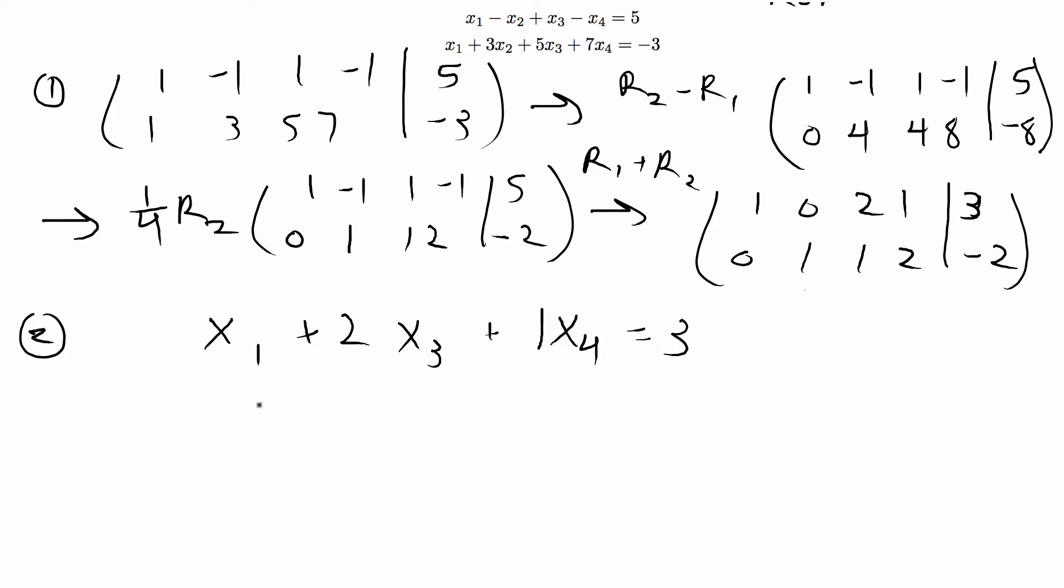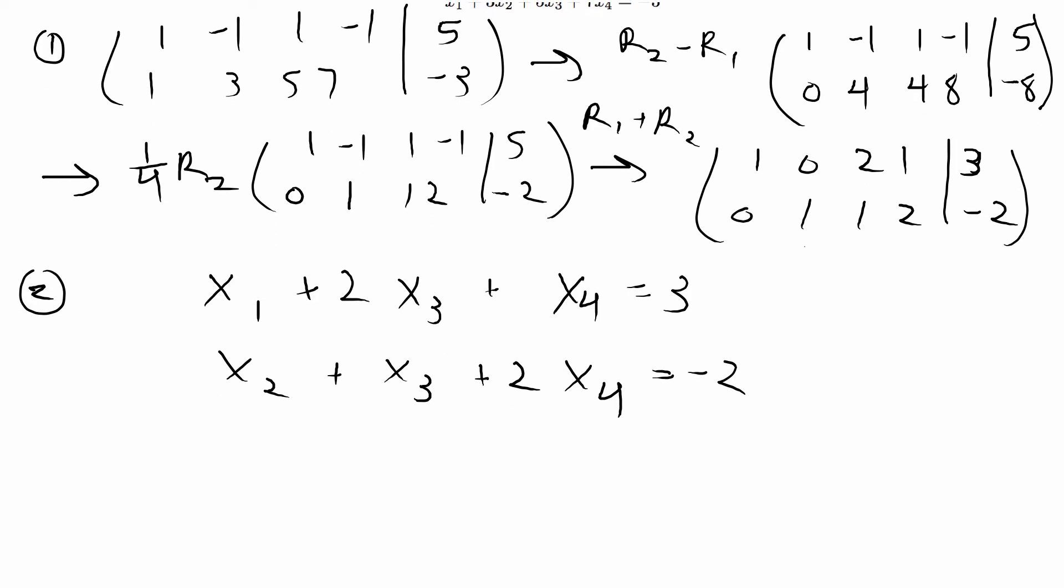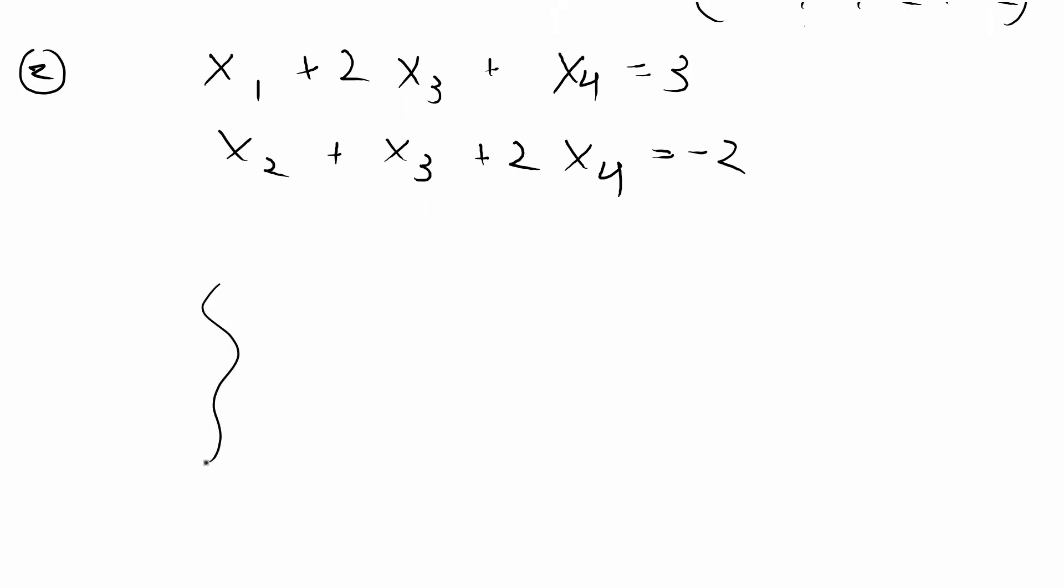This is equivalent to saying x1 plus 0x2 plus 2x3 plus 1x4 is equal to 3 for the first row, and then 0x1 plus x2 plus x3 plus 2x4 is equal to -2. The solution is just going to be written out what x1 is equal to.